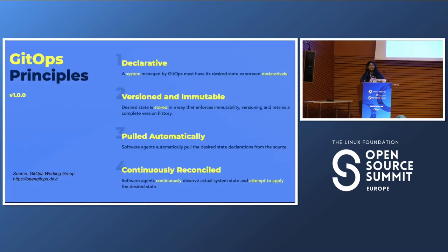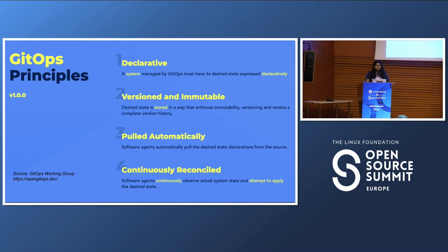There are a set of GitOps principles put in place by a group called the GitOps Working Group. If you're interested, you can go to opengitops.dev — we meet bimonthly and love people to come chat and talk GitOps, and we're always looking for new members. The first principle is that a system managed by GitOps must have its desired state expressed declaratively — things are written in code, there's reusability, there's an audit trail, etc.